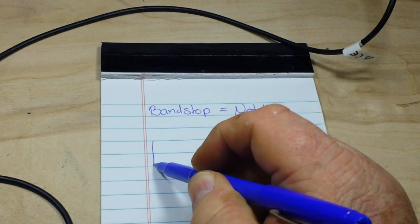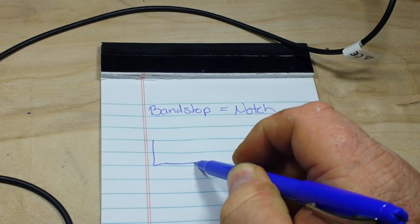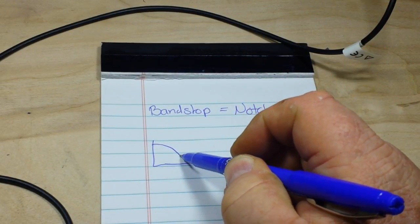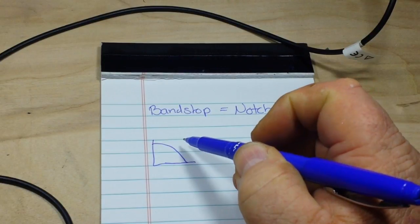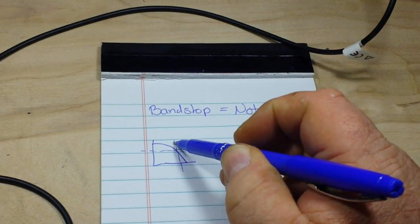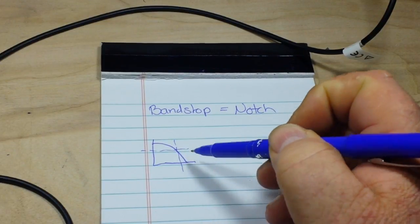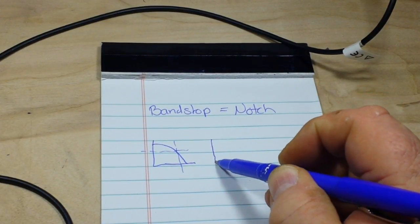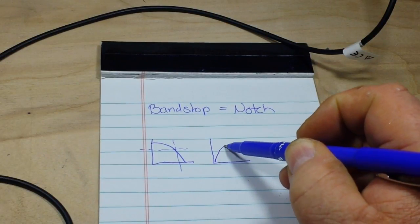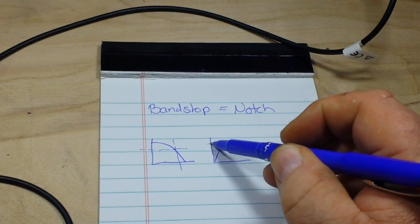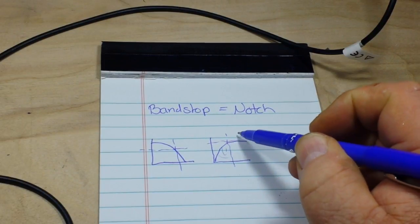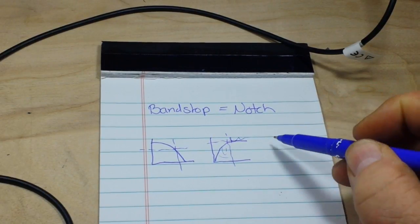So let's do just a quick review here. This is our high pass filter. Everything up here is passed, everything here is attenuated. Our low pass filter, basically the opposite. Everything here is passed, everything here is attenuated.